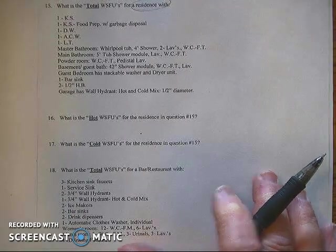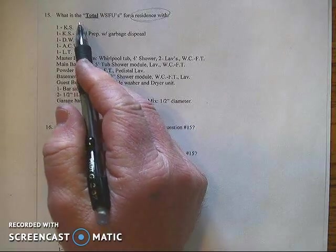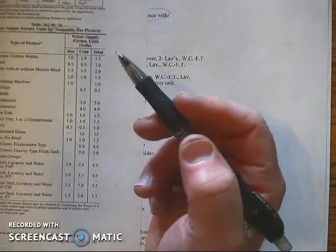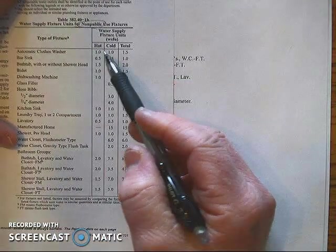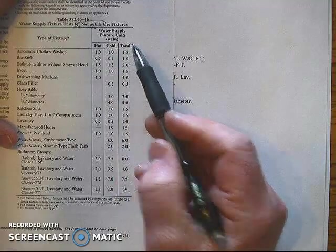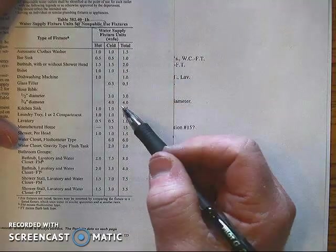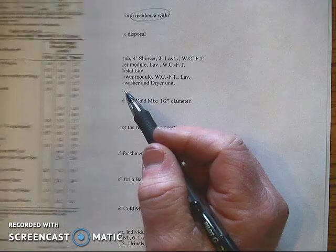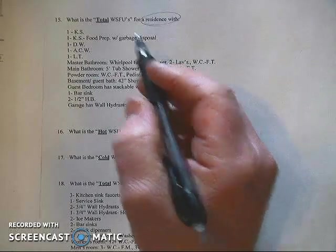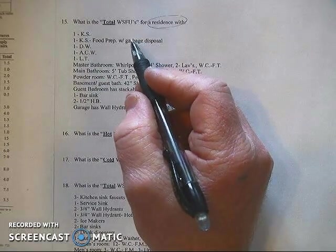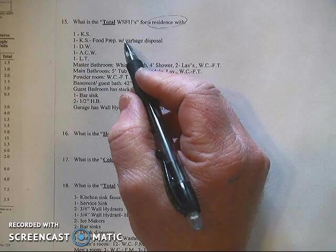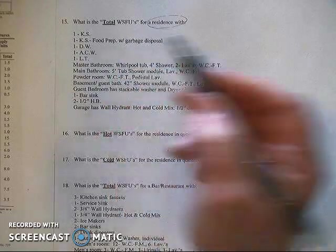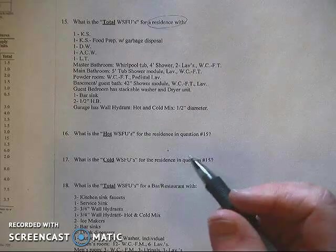So for this we're going to simply look for the total WSFUs. As you can see in the table we have hot, cold, and total loads for many of the fixtures. We'll start off by looking at the list and then just gathering up the total WSFU and then eventually grand totaling it to get the building load.